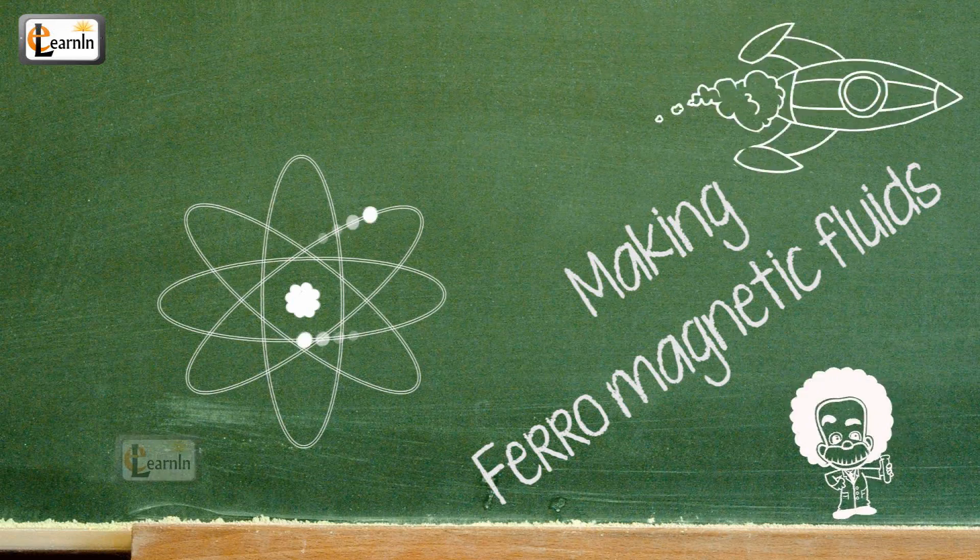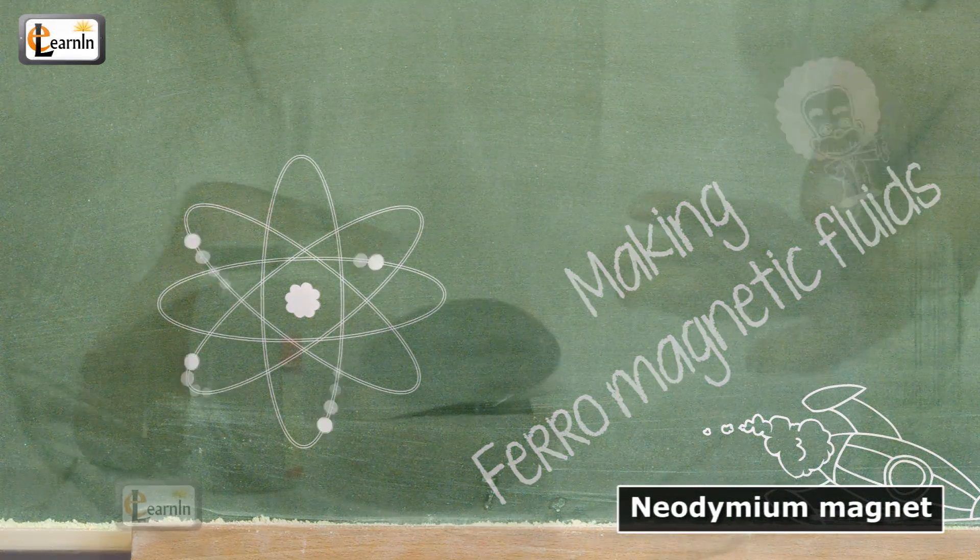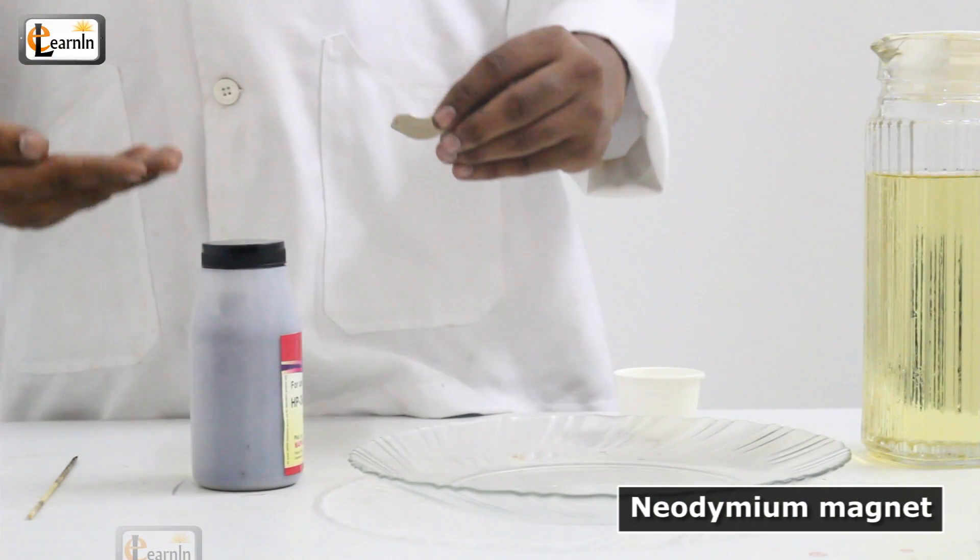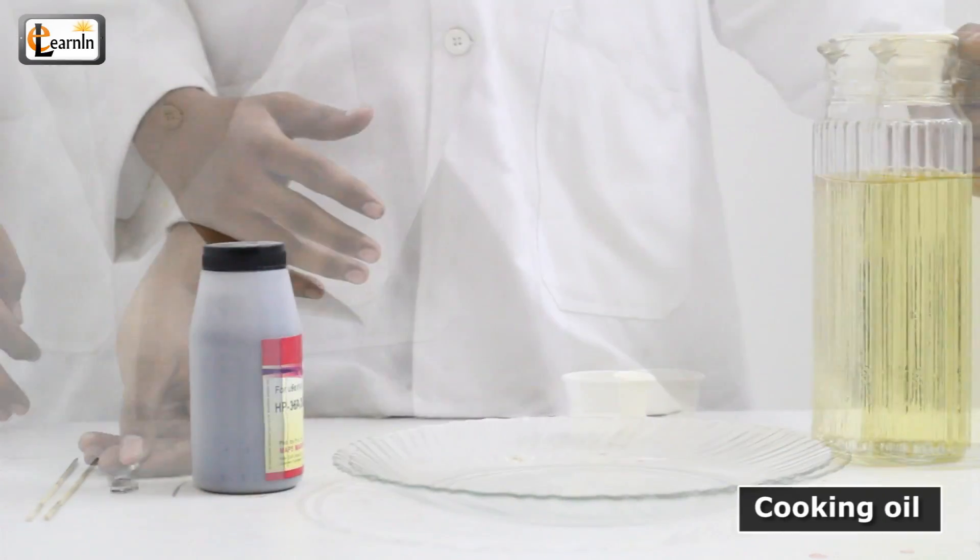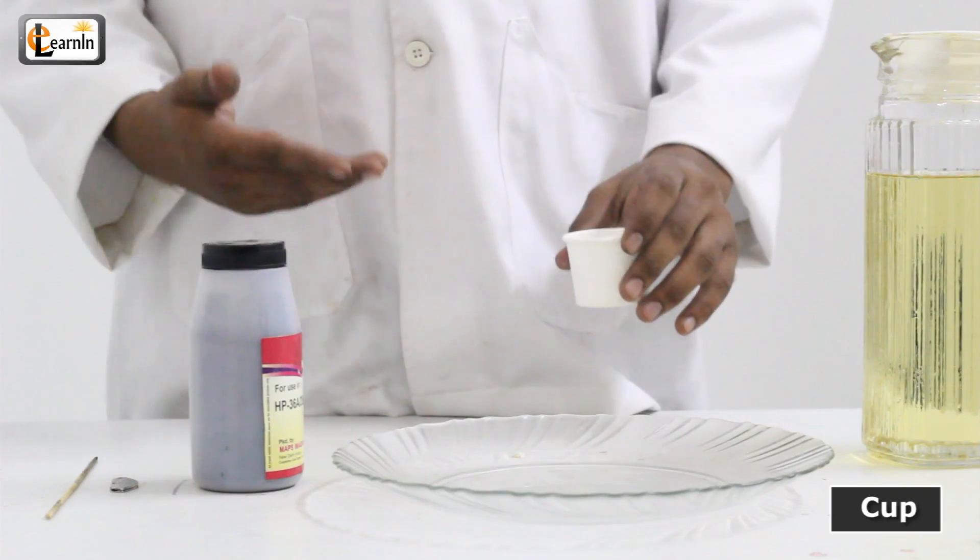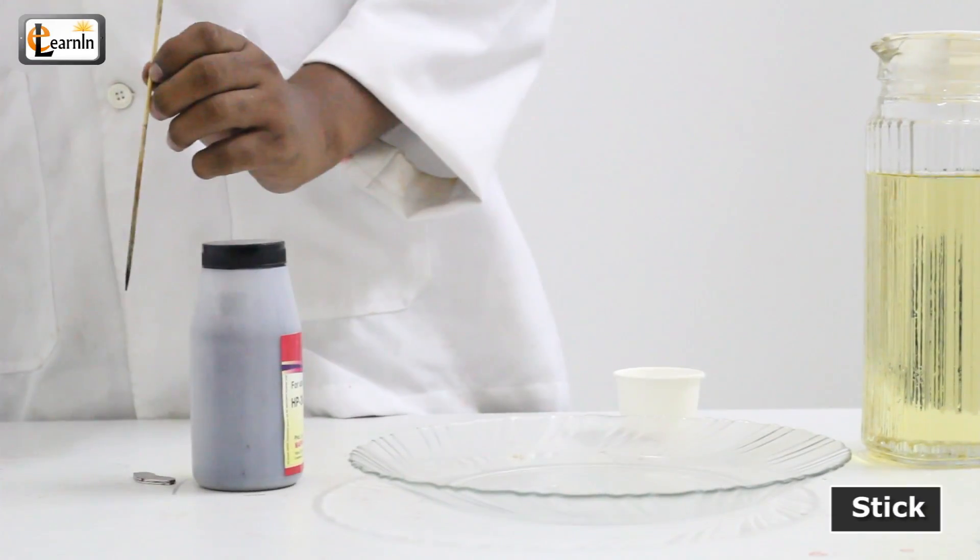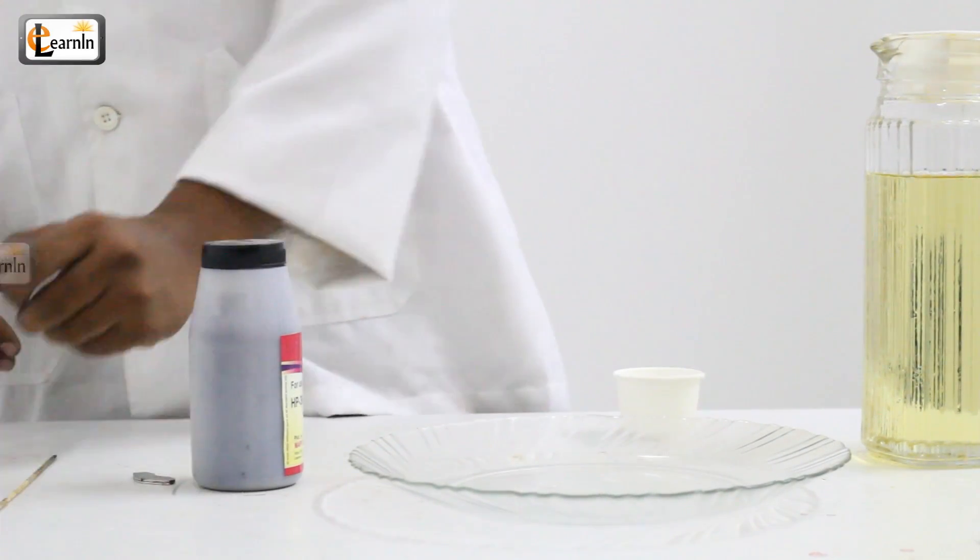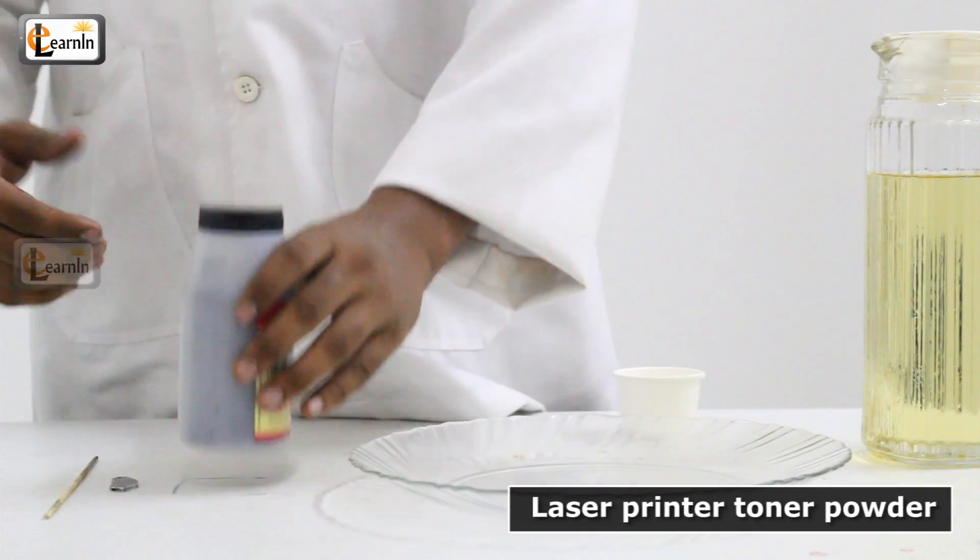For this experiment, you'll need a neodymium magnet or rare earth magnet, usually available in Walmart, cooking oil, a cup, a stick, and some laser printer toner powder.